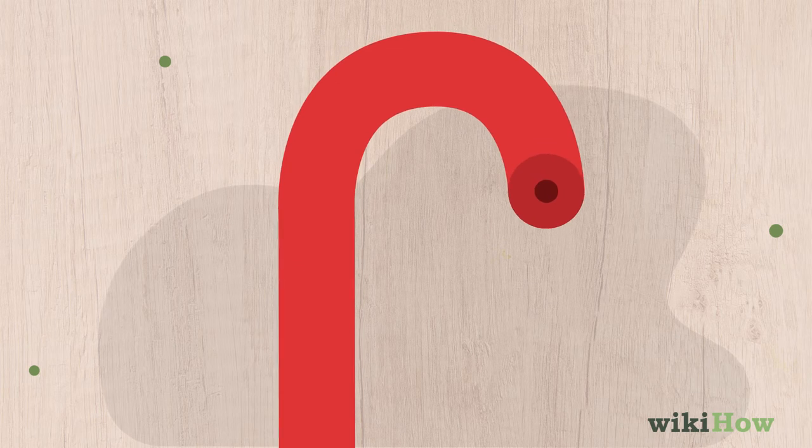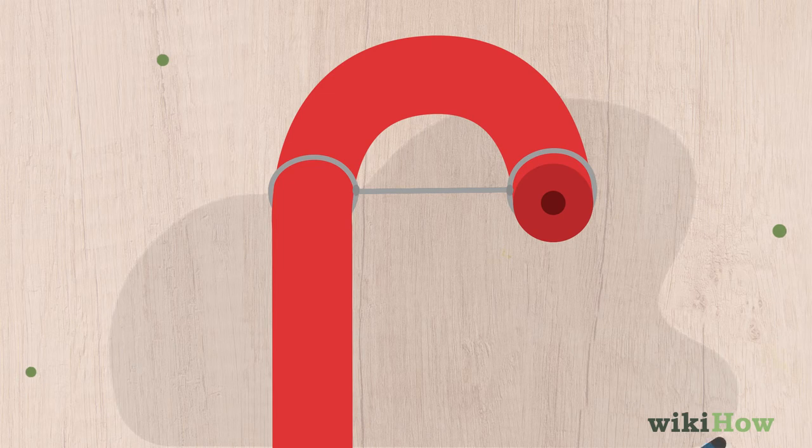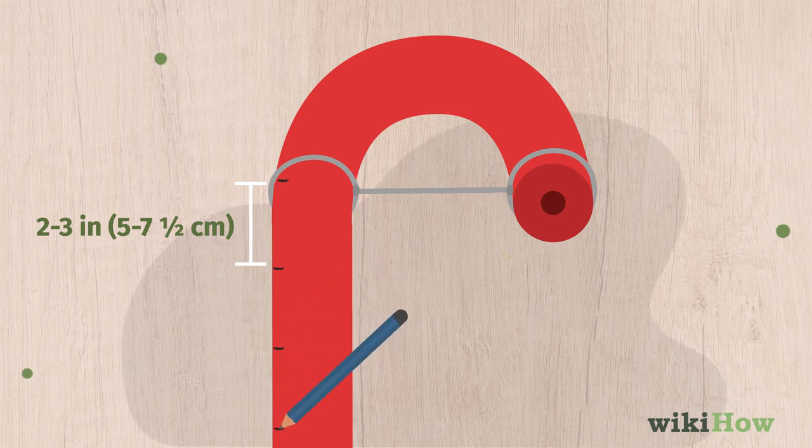Next, tie the fishing line between the two ends of the hook on the candy cane so it holds its shape. Mark every 2 to 3 inches, 5 to 7.5 centimeters, along the candy cane with a pencil.